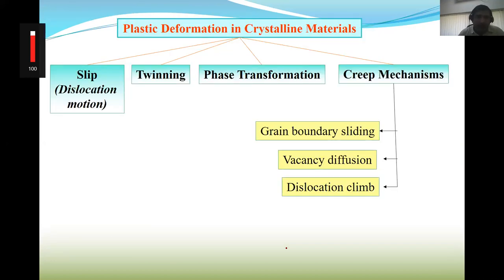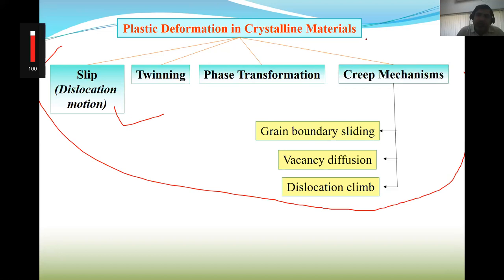How does plastic deformation happen? We know it occurs through slip, twinning, and phase transformation. At elevated temperature there are additional deformation mechanisms — creep mechanisms like grain boundary sliding, vacancy diffusion, and dislocation climb. All these deformation mechanisms dictate the total metal forming behavior and the final microstructure of the material.